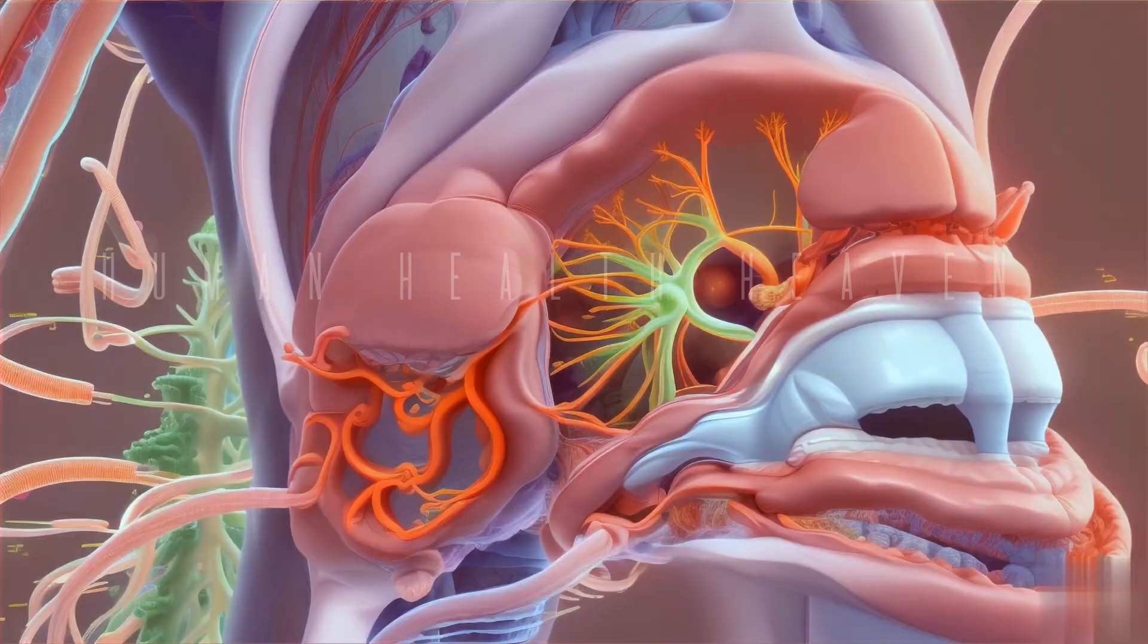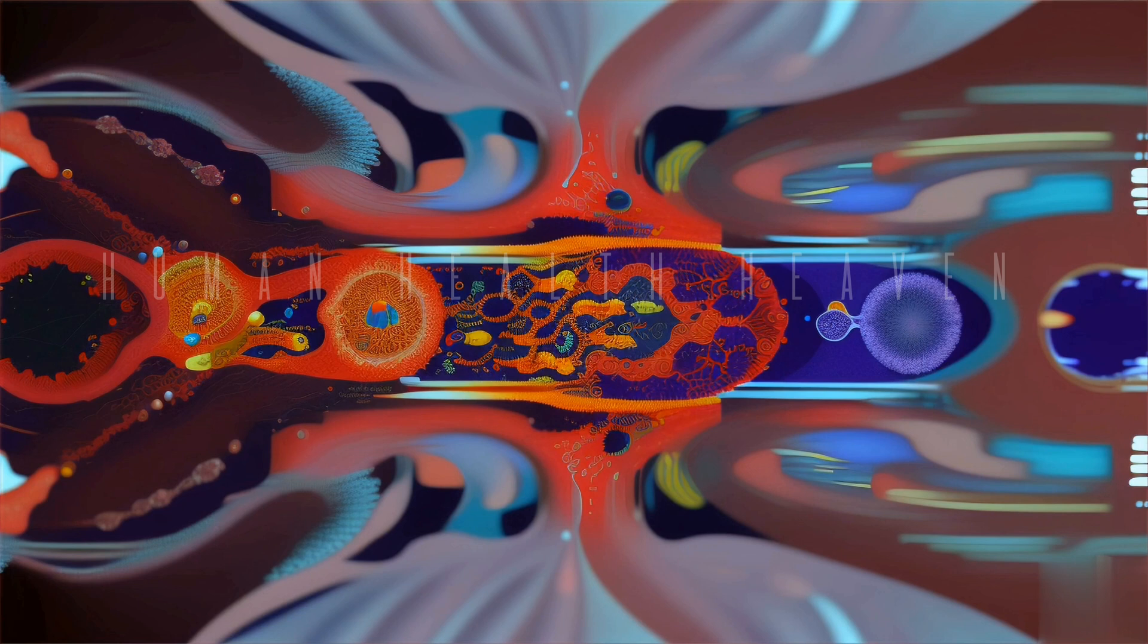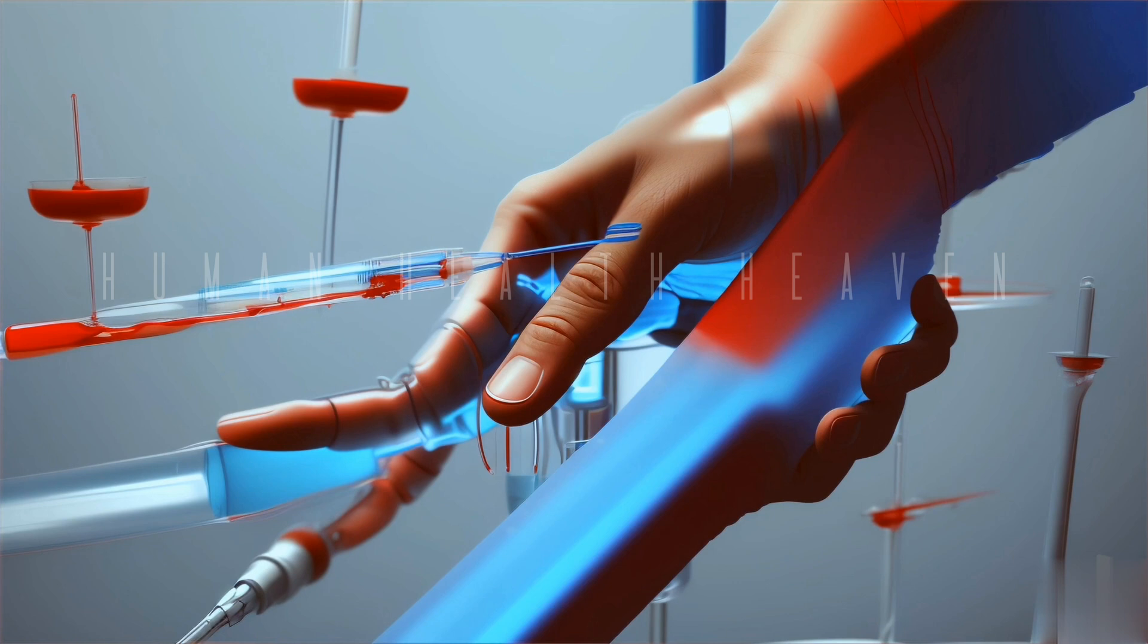The spleen is a body organ located in the upper left part of the abdomen, bordered by the pelvic bones and behind the stomach. It is part of the lymphatic nervous system and plays many important roles in the body.